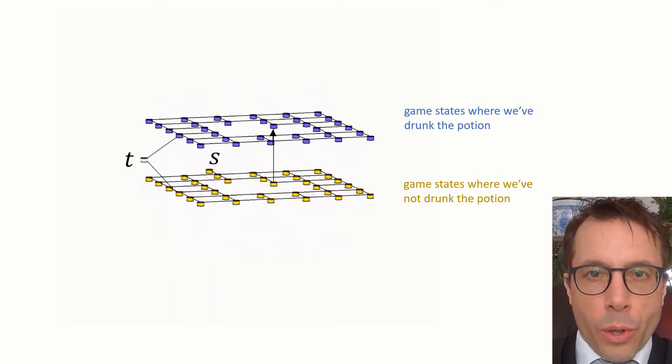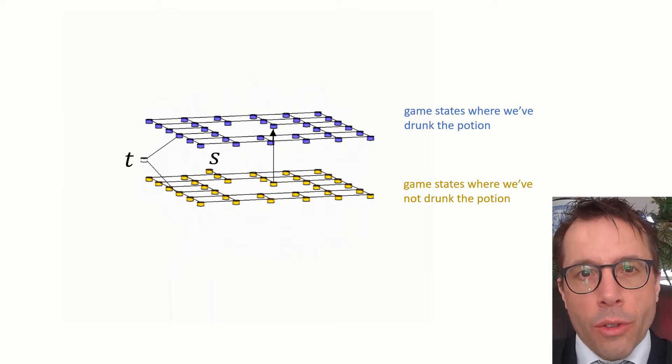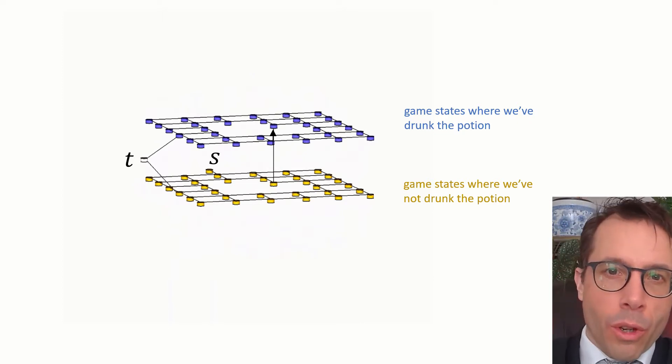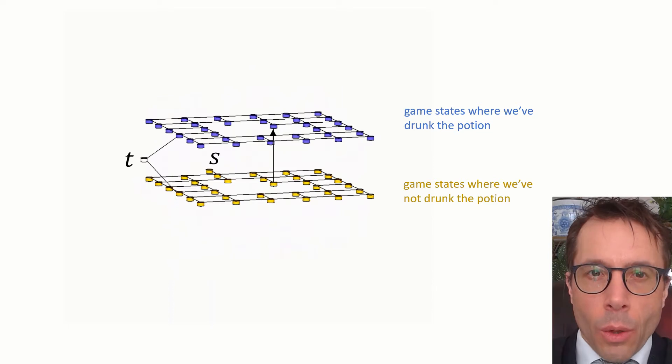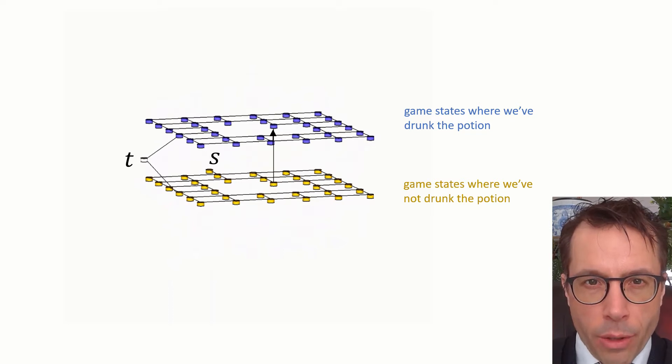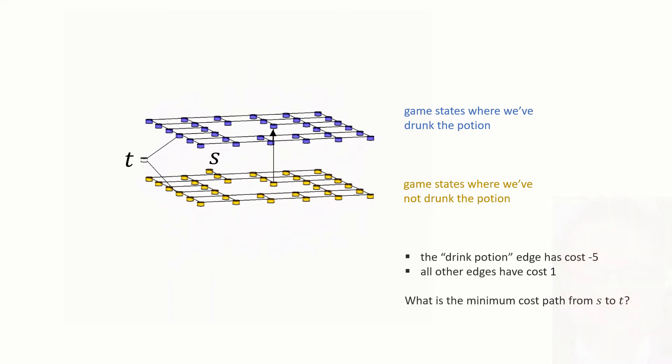As before, we still want to get from the start vertex s to the end vertex t. The start vertex is definitely on the haven't drunk the potion plane, and I've put the end vertex in between to say we need to get to the exit, and it's up to us if we go via the bottom plane or the top plane. We wanted to get to the exit as efficiently as possible, and each step costs us 1 unit of health, and drinking the potion gives us 5 units.